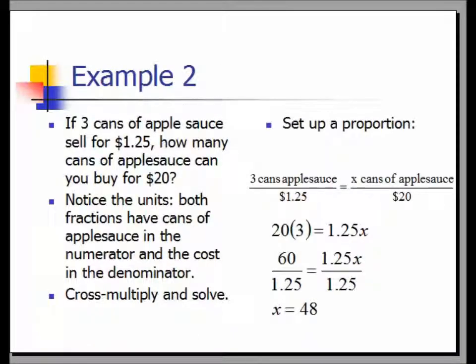Example 2: If three cans of applesauce sell for $1.25, how many cans of applesauce can you buy for $20? Set up a proportion: three cans of applesauce over $1.25 equals x cans of applesauce over $20. Notice the units are consistent — number of cans in the numerator and cost in the denominator. Cross multiplying gives 20 times 3 equals 1.25x. Dividing both sides by 1.25 gives x equals 48. Therefore, we could buy 48 cans of applesauce for $20.